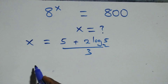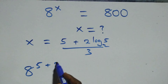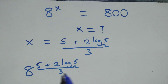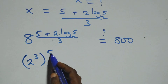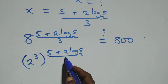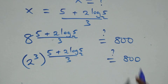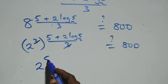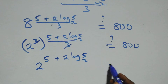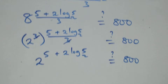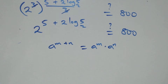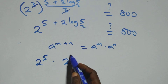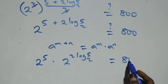Let's check if this satisfies the given problem by substituting x equals to (5 + 2 log₂5) / 3. We have 8 raised to the power (5 + 2 log₂5)/3 equals 800. Since 8 = 2³, the power 3 cancels through, giving 2 raised to the power (5 + 2 log₂5) equals 800. Applying the rule a^(m+n) = a^m × a^n, we get 2⁵ times 2^(2 log₂5) equals 800.